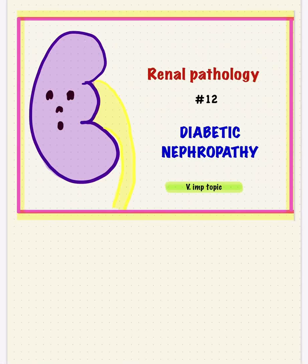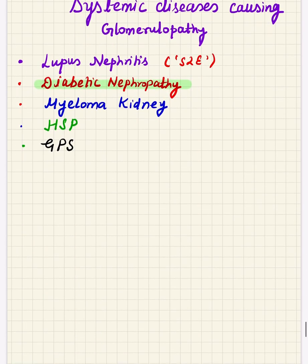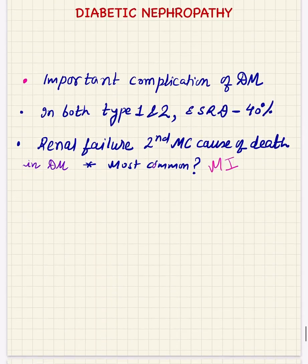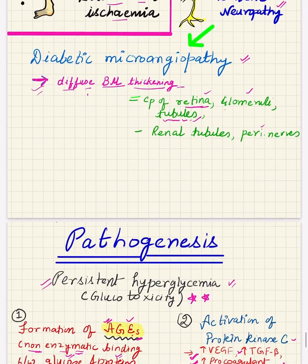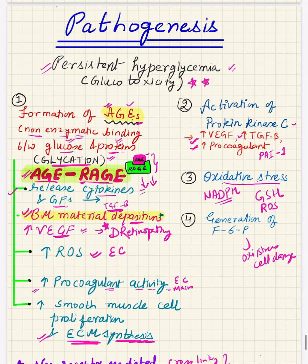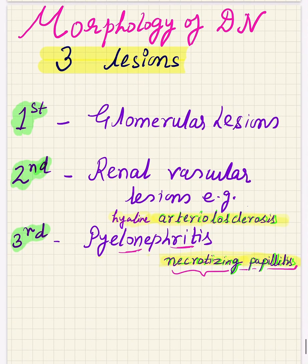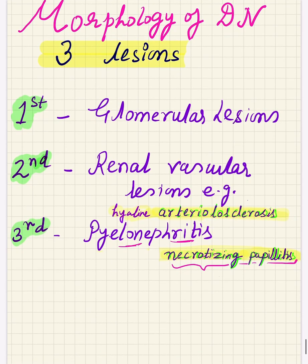Hello and welcome back. This is the concluding part for diabetic nephropathy. In the last lecture, I told you about the pathogenesis of the chronic complication of diabetes. Diabetic nephropathy comes under the microvascular complication of diabetes mellitus, and we discussed how advanced glycation end products cause various downstream effects leading to different complications of diabetes. Now we come to the topic of this lecture: the morphology of diabetic nephropathy.